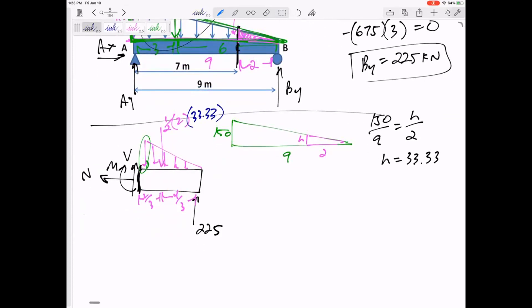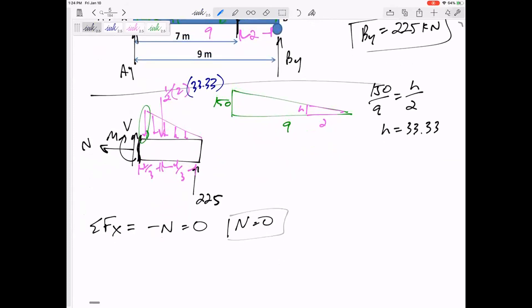All right. Now I think I'm ready to sum the forces in X. N is pointed to the left. Equals zero. So N is equal to zero. That's fine. My internal normal force is equal to zero. It just doesn't feel that on the inside. And that's fine.